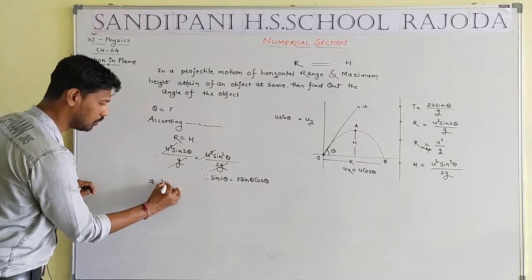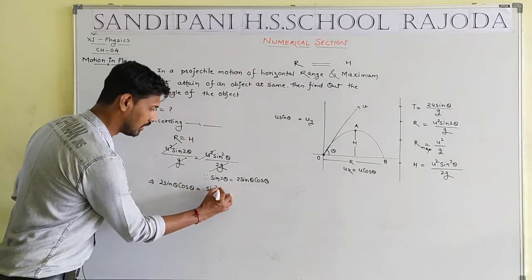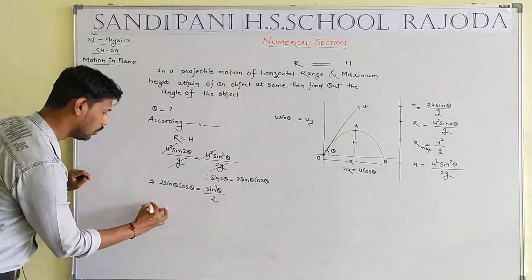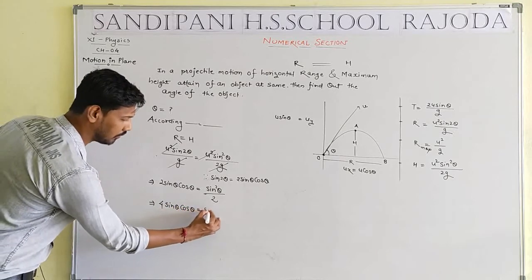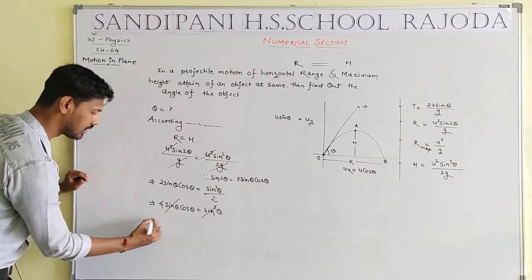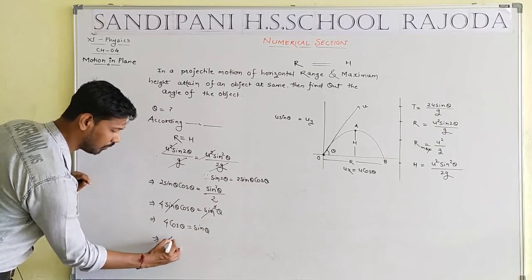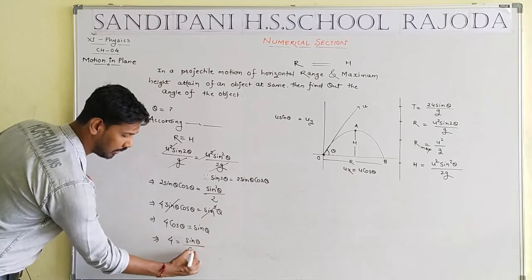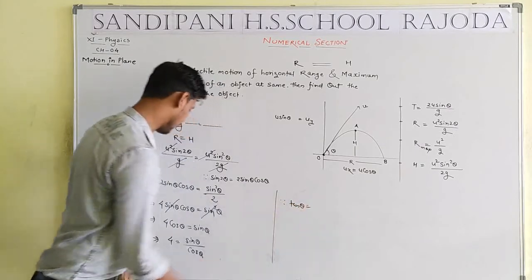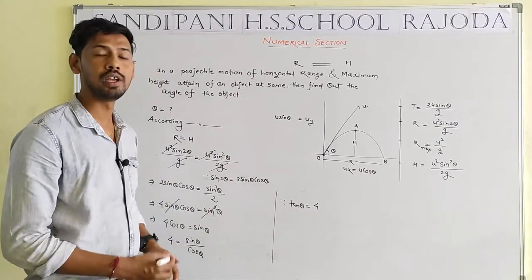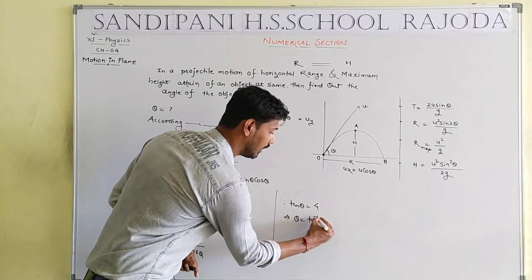Substituting sin2θ = 2 sinθ cosθ, we get: 2 sinθ cosθ = sin²θ / 2. Rearranging: 4 sinθ cosθ = sin²θ. Dividing both sides by sinθ: 4 cosθ = sinθ. Therefore sinθ / cosθ = 4, which means tanθ = 4. So θ = tan⁻¹(4). This is the final result when R = H.